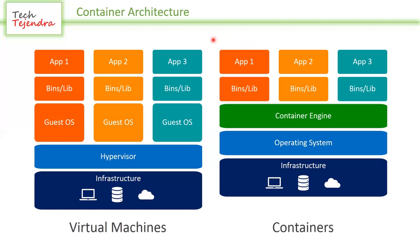Inside each container we keep two things: the binaries and libraries, and the application. So the application is packaged with its own dependencies. A container works on a base image — this base image can be any kind of base image. For example, maybe your code requires RHEL, Red Hat Enterprise Linux, to run your application.